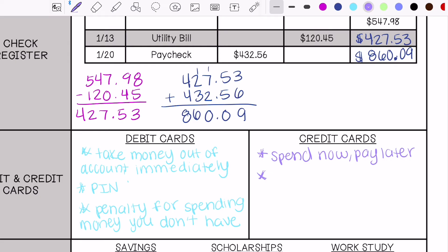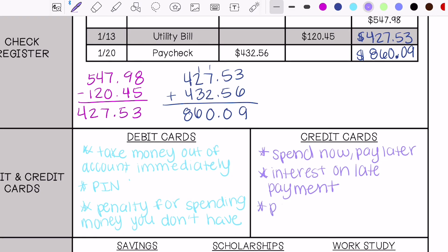If you pay your credit card off late, usually you pay credit cards off once a month, you can get interest on late payments so you will end up spending more than originally whatever you bought was because of late payments. Usually pay it off once a month.